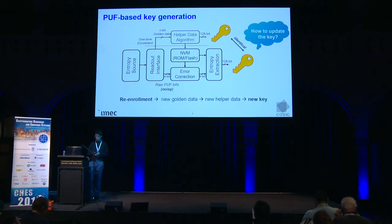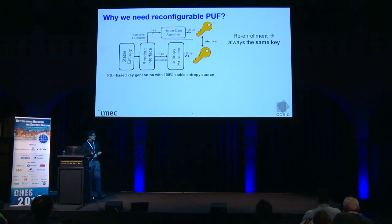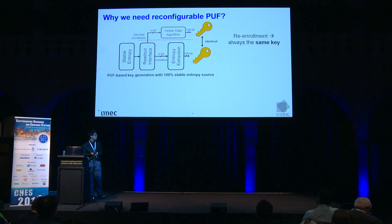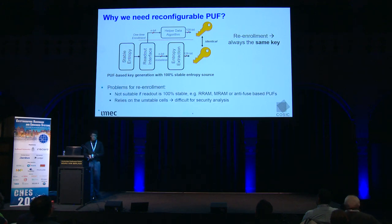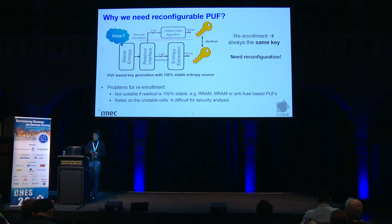Re-enrollment can be used — we apply a re-enrollment phase again and derive a new helper data and a new key. But we still need a reconfigurable PUF because in some cases the PUF entropy source is stable, introducing no errors. If you keep re-enrolling, it will always derive the same key, so re-enrollment doesn't work for key updates. Re-enrollment also relies on unstable cells, which are not always consistent, and each PUF has a different number of unstable cells with different instability levels. This is why we need a reconfigurable PUF.